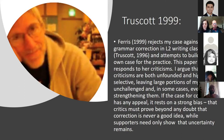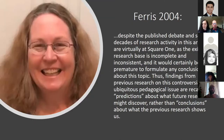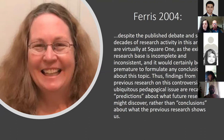Trascott argued that criticisms of his position were both unfounded and highly selective, leaving large portions of his case unchallenged. He contended that if the case for correction has any appeal, it rests on a strong bias — critics must prove beyond any doubt that correction is never a good idea, while supporters need only show that uncertainty remains. Then in 2004, Ferris issued a resounding general denunciation of all the research in the area, including her own, concluding: 'Despite decades of research activity, we are virtually at square one, as the existing research base is incomplete and inconsistent.'